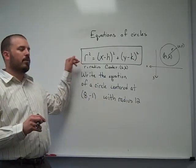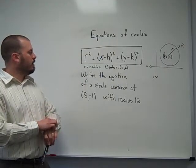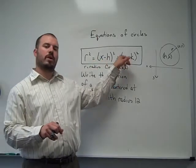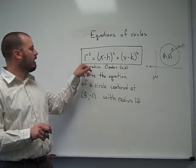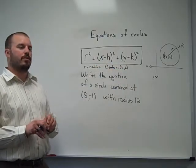In a previous post, we looked at where the formula for the circle comes from, and we know that r squared equals x minus h quantity squared plus y minus k quantity squared, where r stands for radius length and hk represents the center of the circle.